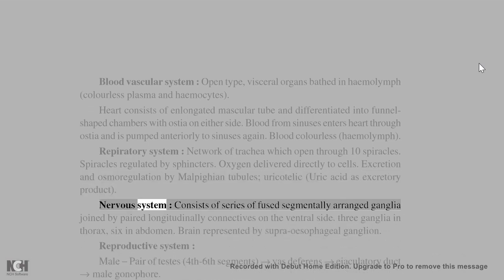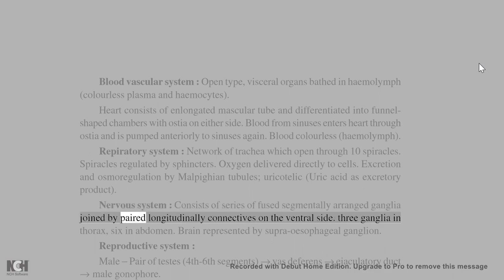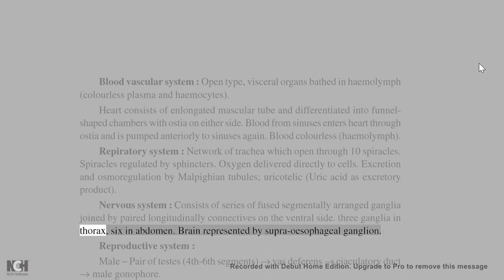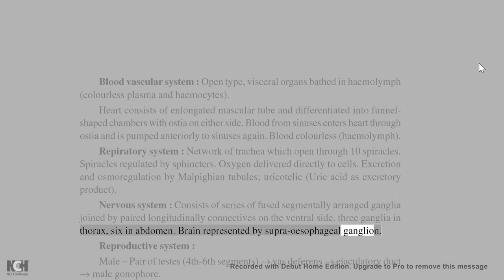The nervous system consists of a series of fused, segmentally arranged ganglia joined by paired longitudinal connectives on the ventral side. There are three ganglia in the thorax and six in the abdomen. The brain is represented by the supra-esophageal ganglion.